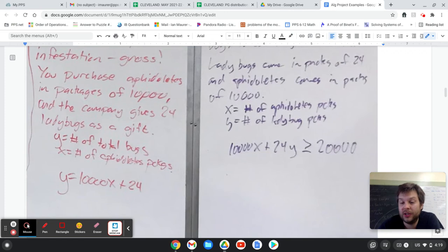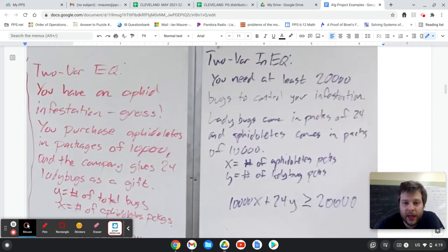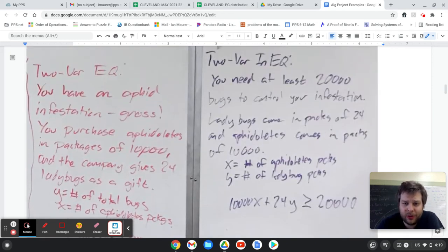So you're not going to solve for x or y there. Instead, you'd be drawing a graph that shows all the possible combinations of bugs based on how many packages of aphidoletes you order with a slope of 10,000.